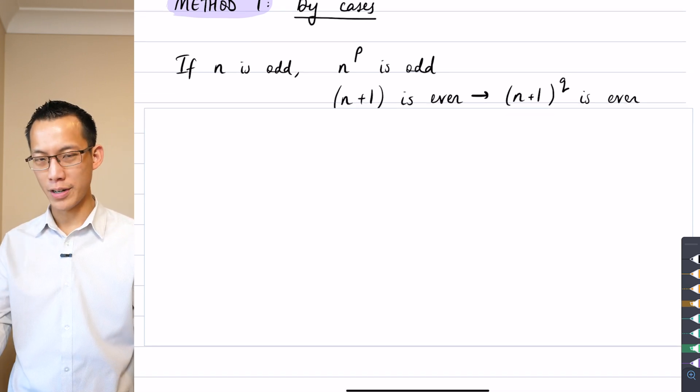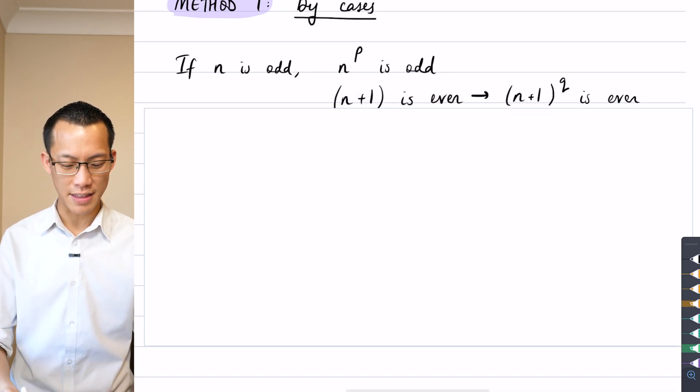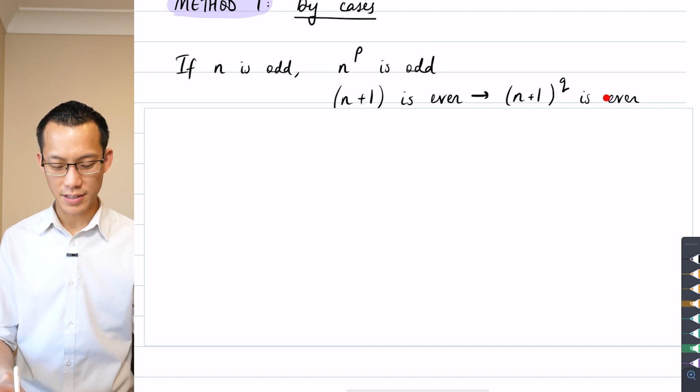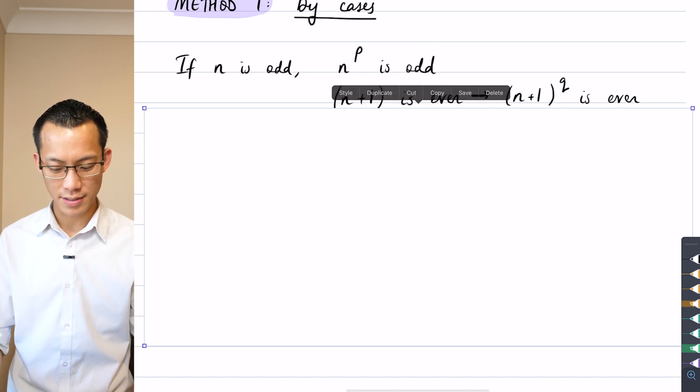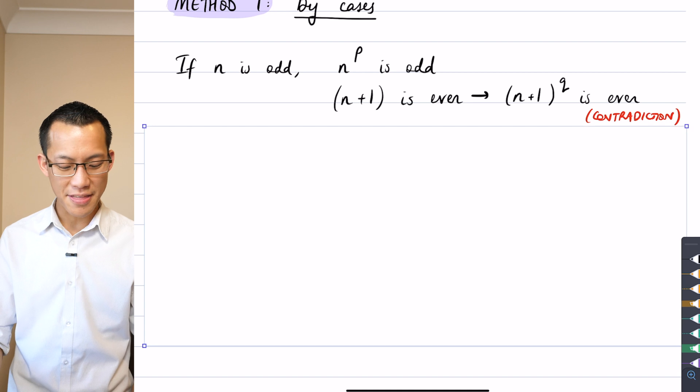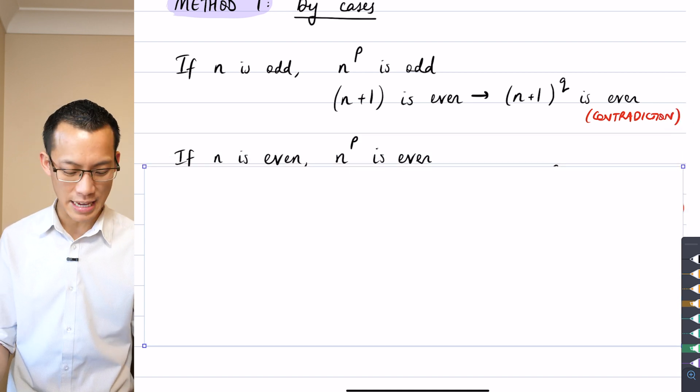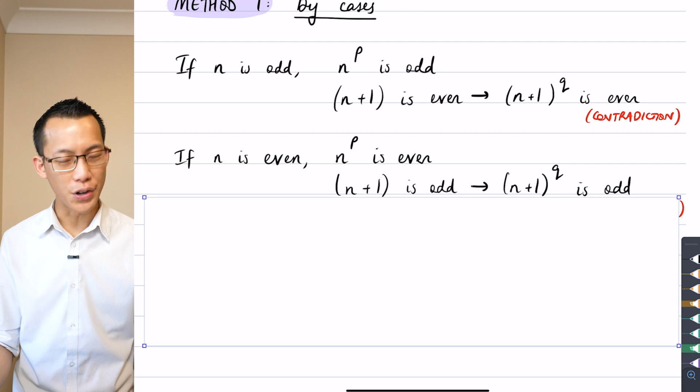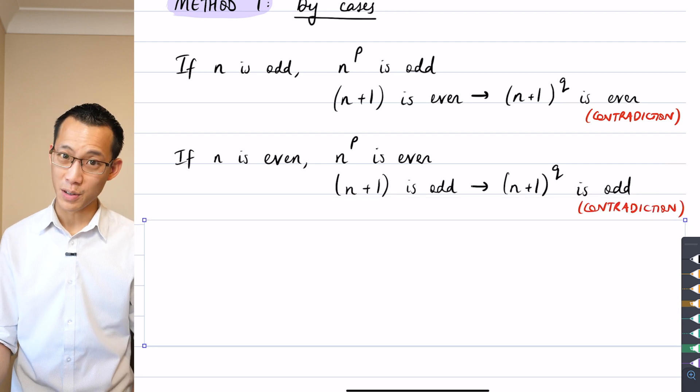And so therefore I can say, well, I've got a contradiction, right? That the left hand side is odd. The right hand side is even. So that's something which can't be true. And then you can reverse that, right? You can say, well, what happens if it's even on the left and then odd on the right? That is also a contradiction.